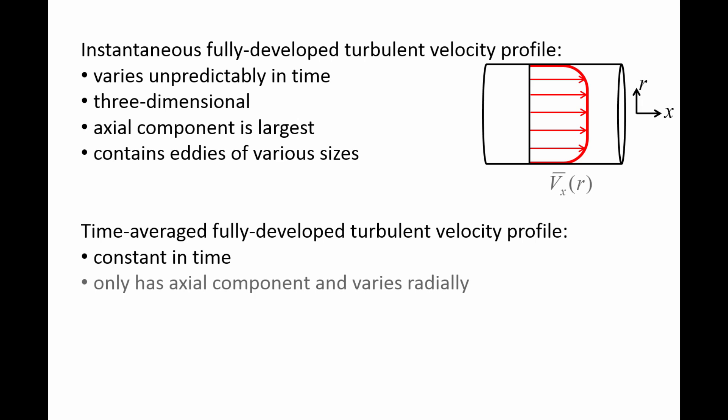The time-averaged turbulent velocity profile only has an axial component, denoted by Vx bar, and varies radially, similar to fully developed laminar flows. However, unlike laminar flows, the time-averaged turbulent velocity profile appears flatter near the center and drops rapidly to zero near the walls.